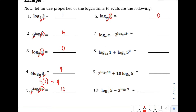Number 7: we have the logarithm of C with base C, which equals positive 1. Minus 2 raised to the logarithm of 19 with base 2 — the base matches the logarithm's base, so that equals 19. Then 1 minus 19 equals negative 18.